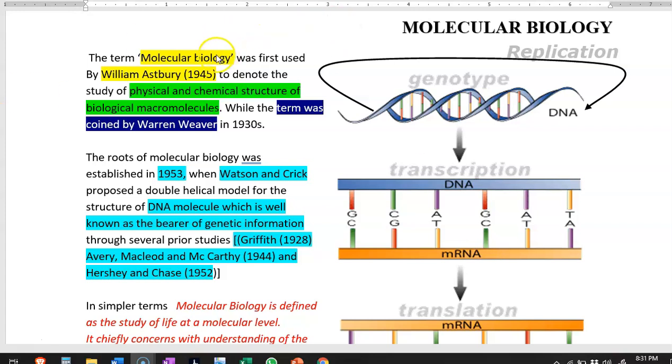The term molecular biology was first used by William Ashbery in 1945 to denote the physical and chemical structure of biological macromolecules. This term was actually coined by Warren Weaver in 1930, but it was first used by William Ashbery.